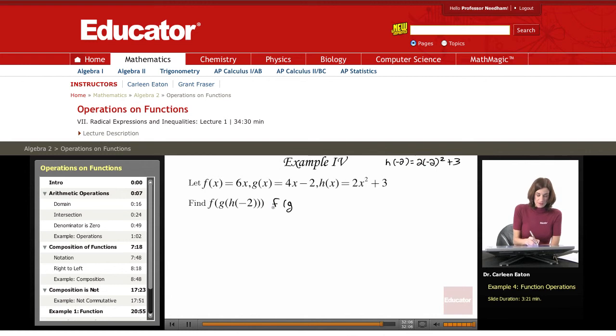So this is f of g of 2 times negative two squared plus three, which equals f of g of... negative two squared is four, times two is eight, plus three, which is f of g of 11.